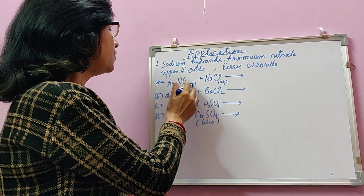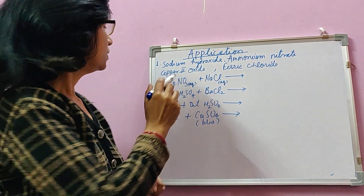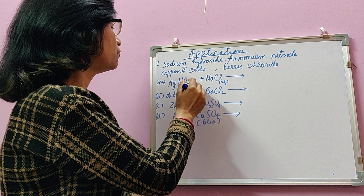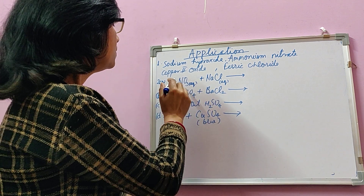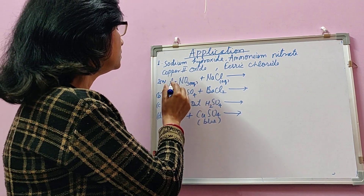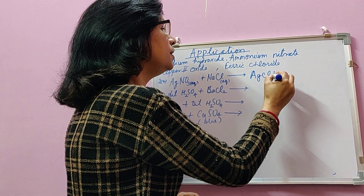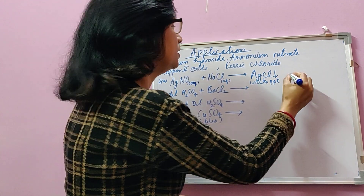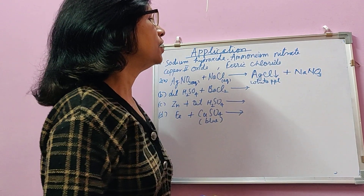The first reaction is when an aqueous solution of silver nitrate (AgNO₃) is mixed with sodium chloride (NaCl) solution. A double decomposition reaction takes place — silver combines with chloride to form AgCl. AgCl is insoluble and forms a white precipitate, shown by a downward arrow. The remaining sodium forms NaNO₃, which is soluble and remains in solution.